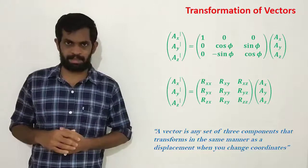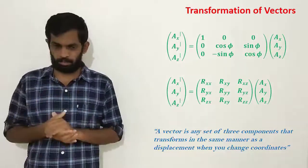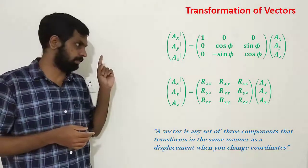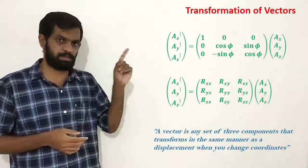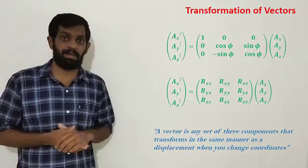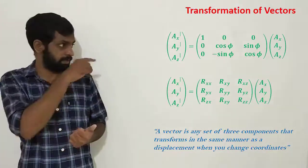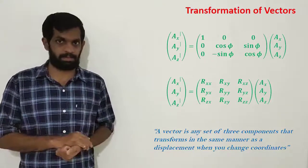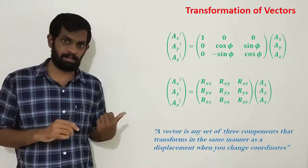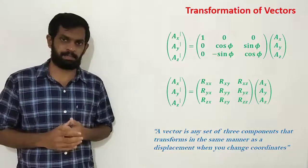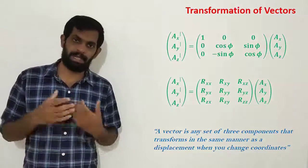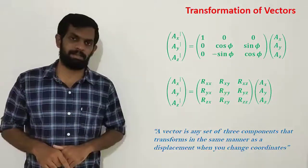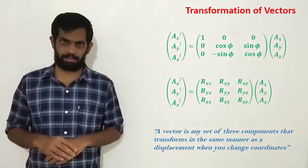Generally, if I rotate the axis, the components will change according to a rotation matrix. For a general rotation, there is a 3-by-3 rotation matrix R such that the new components equal R times the old components.